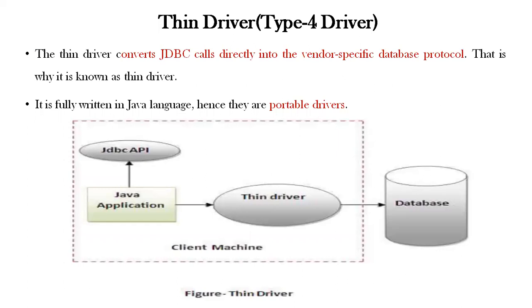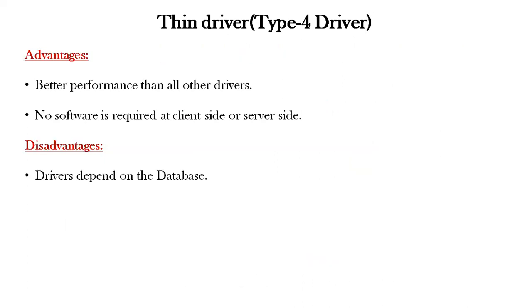The thin driver is a Type 4 driver. The thin driver converts JDBC calls directly into vendor-specific database protocol, which is why it is known as the thin driver. It is fully written in Java and is a portable driver. The architecture connects the JDBC API through the Java application to the thin driver on the client-side machine, and the database on the server-side. Advantages: better performance than all other drivers, no software required on the client-side or server-side. Disadvantages: the driver is dependent on the database.